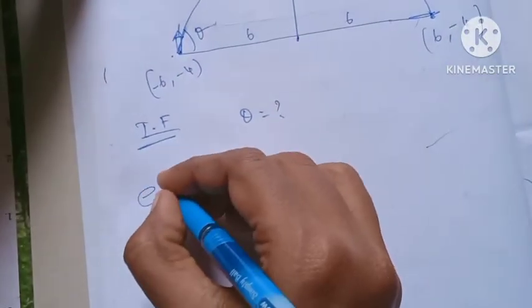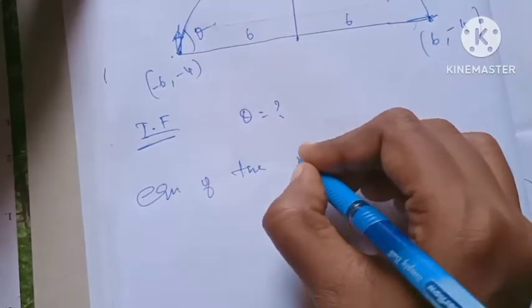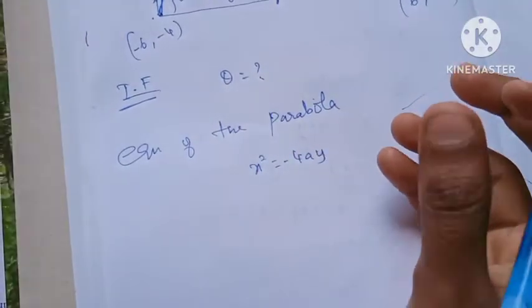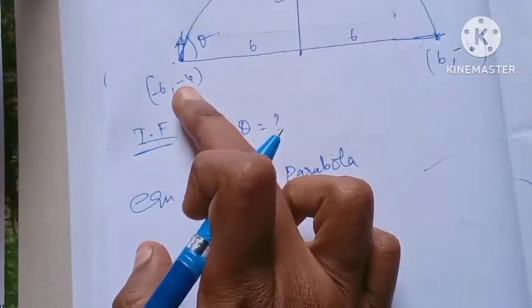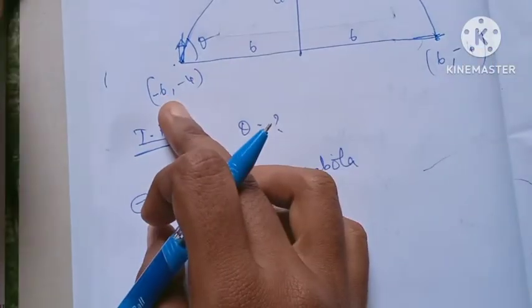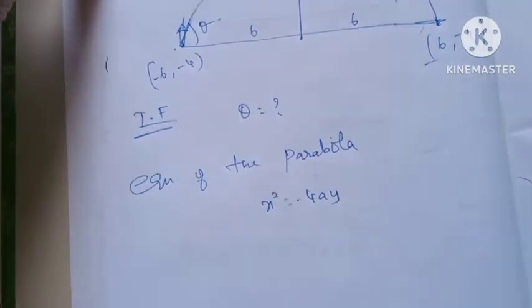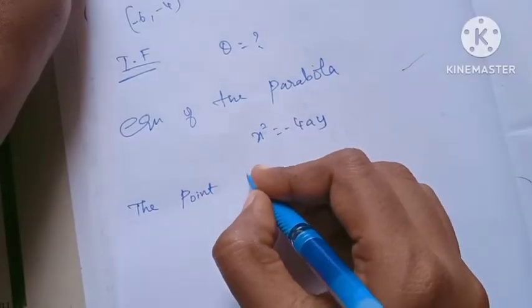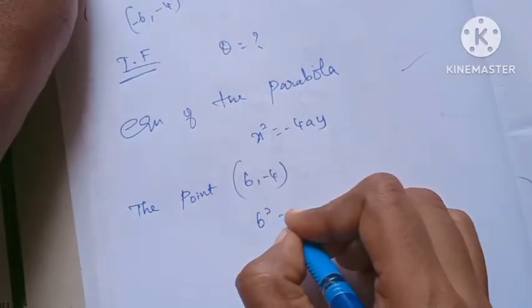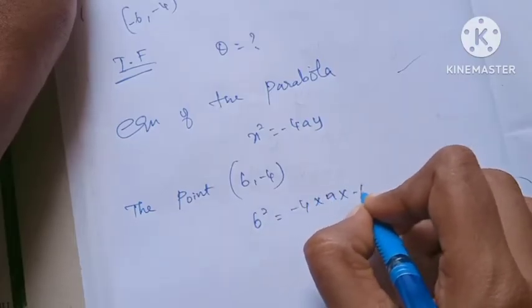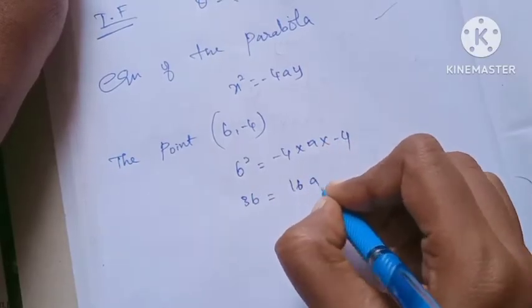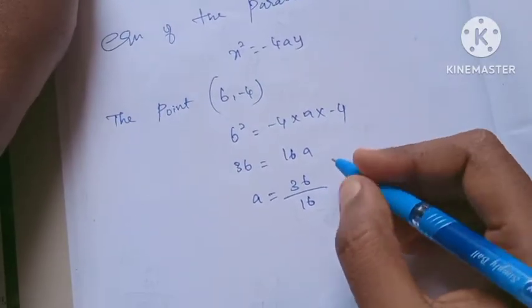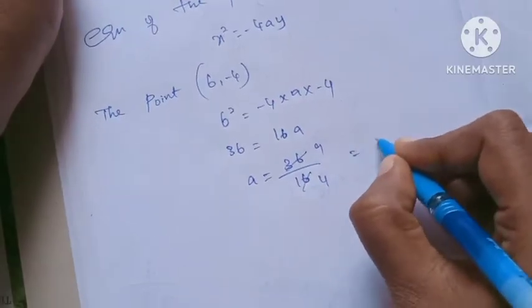Equation of the parabola: x² = -4ay. We can use this point, the point (6, -4). So 6² = -4a(-4), 36 = 16a. So a = 36/16 = 9/4.